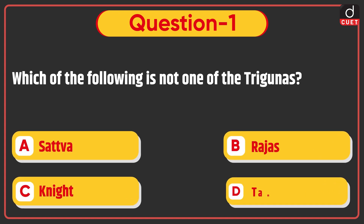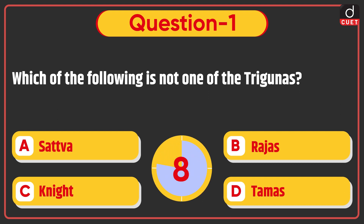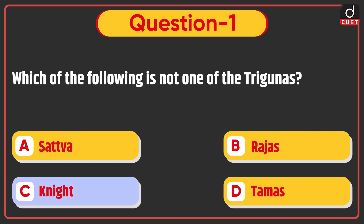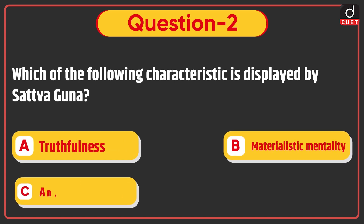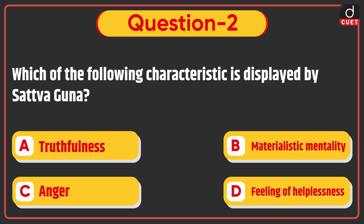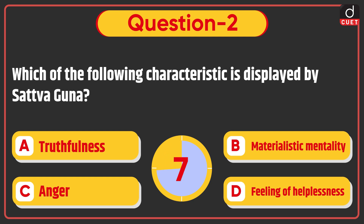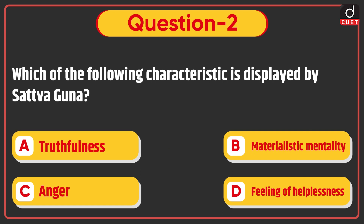First question: which of the following is not one of the trigunas — Sattva, Rajas, Night, or Tamas? The correct answer is option C: Night. Next question: which of the following characteristics is displayed by Sattva Guna — truthfulness, materialistic mentality, anger, or feeling of helplessness? The correct answer is option A: truthfulness.